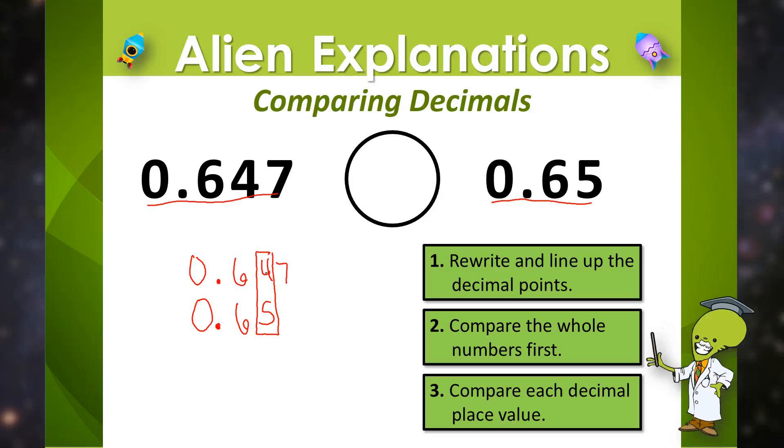Because five is larger than four it doesn't matter about this seven over here, it doesn't matter at all. But because five hundredths is more than four hundredths that makes sixty five hundredths larger than six hundred and forty seven thousandths.